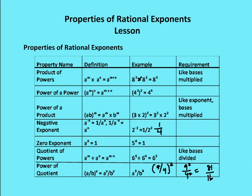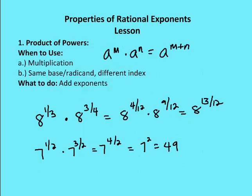Those are just the basics of the properties. Let's go through the properties in detail and then do a couple problems. First, product of the powers: same base, different exponent. All I'm doing is keeping the base the same and adding the exponent values. If I have 8 to the 1 third times 8 to the 3 fourths, I keep the base the same and add the exponents. Since I have fractions, I need a common denominator in order to add them.